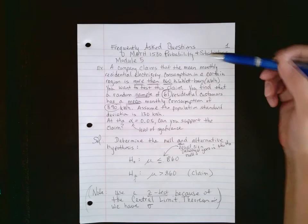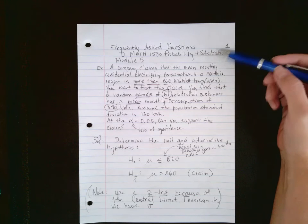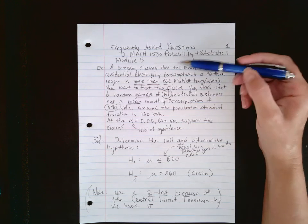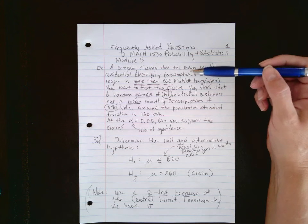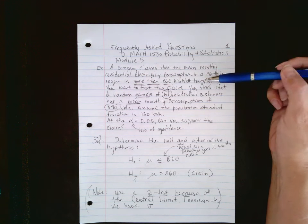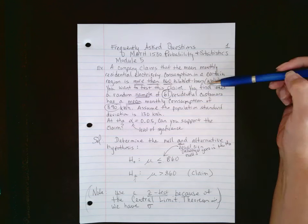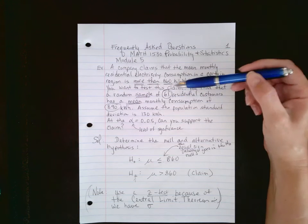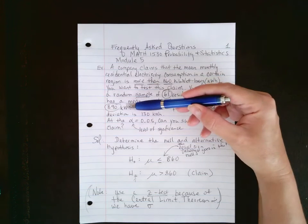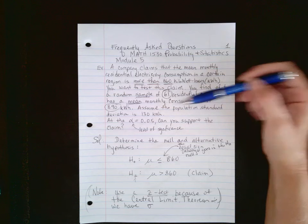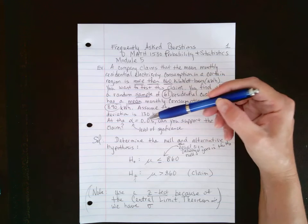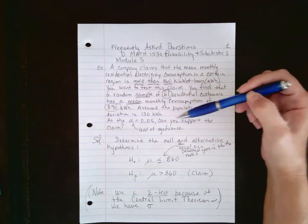This is a frequently asked question from Math 1530, Probability and Statistics, Module 5. A company claims that the mean monthly residential electricity consumption in a certain region is more than 860 kWh. You want to test this claim. You find that a random sample of 61 residential customers has a mean monthly consumption of 890 kWh. Assume the population standard deviation is 130 kWh. At the alpha level of 0.05, can you support the claim?